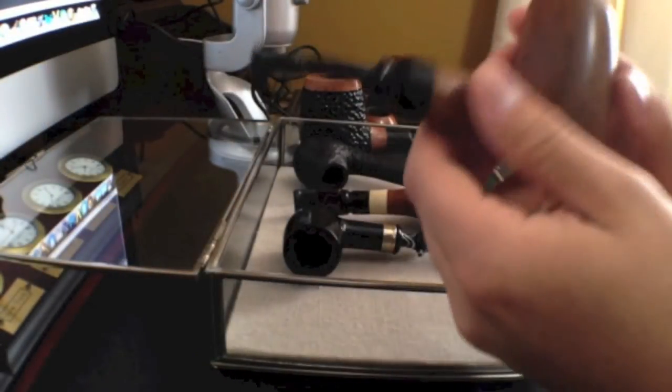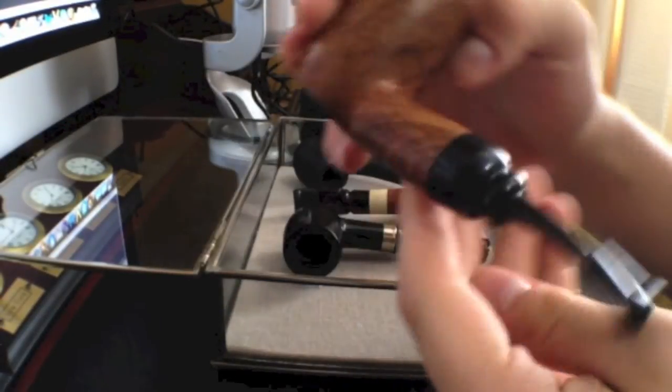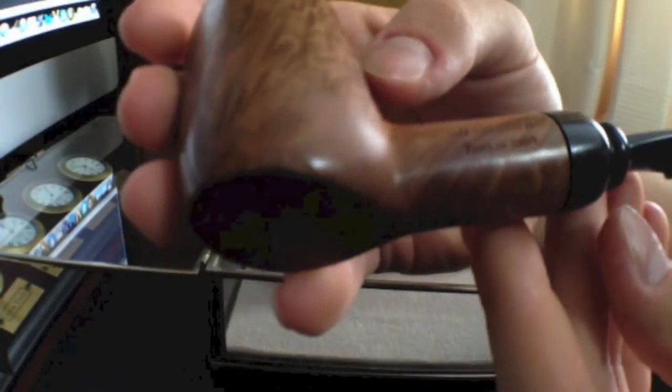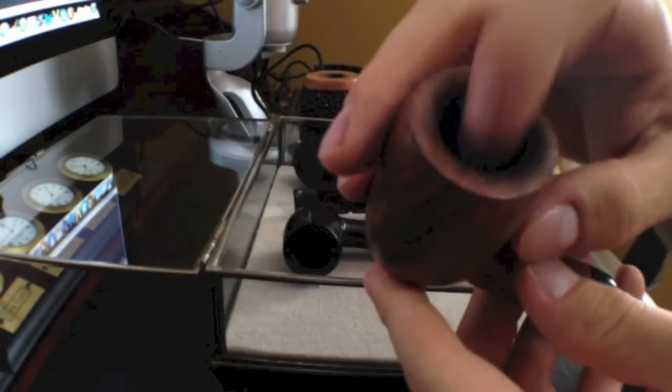Now this first one here is my first pipe I've ever had. It's a Mario Grandi. They're made in Rome in Italy and they're sold on eBay. I'll put a link down below where you can get some Mario Grandi pipes.